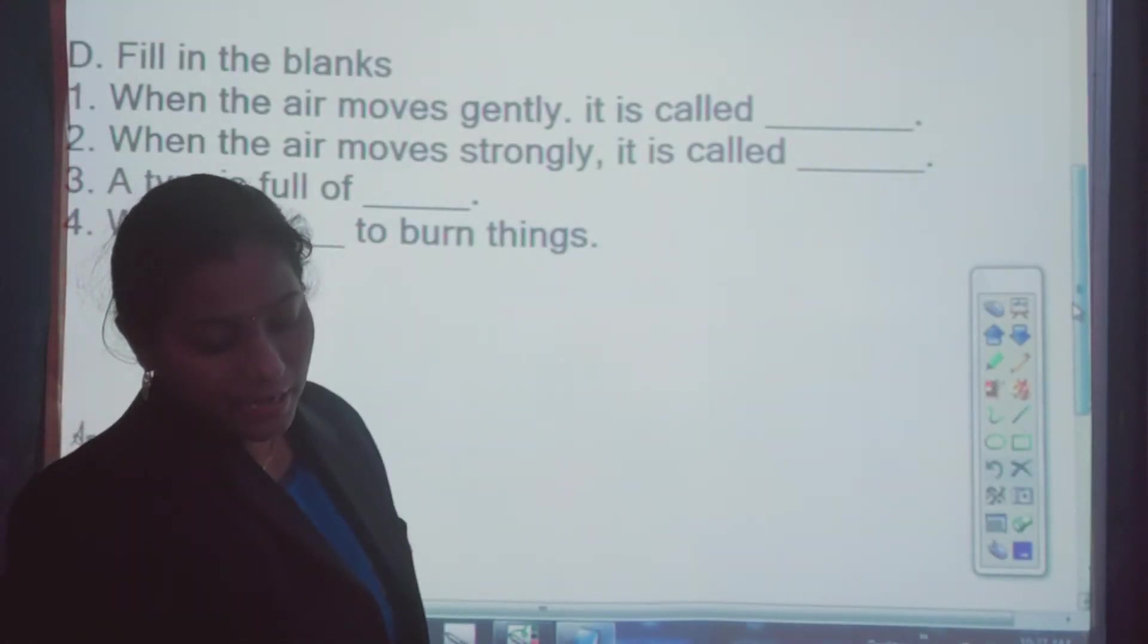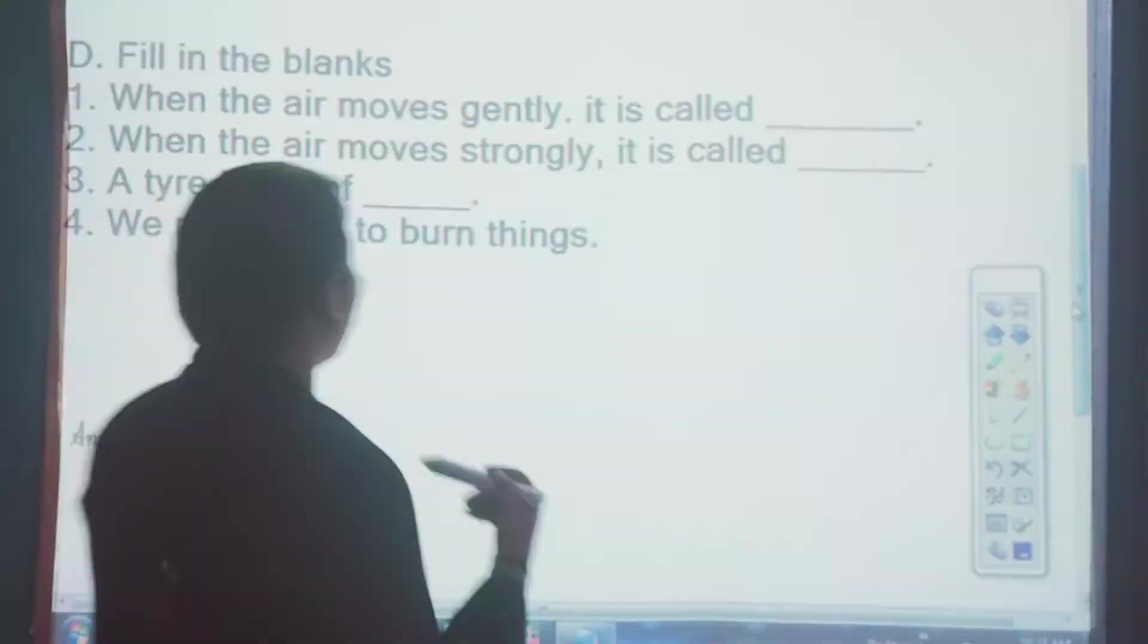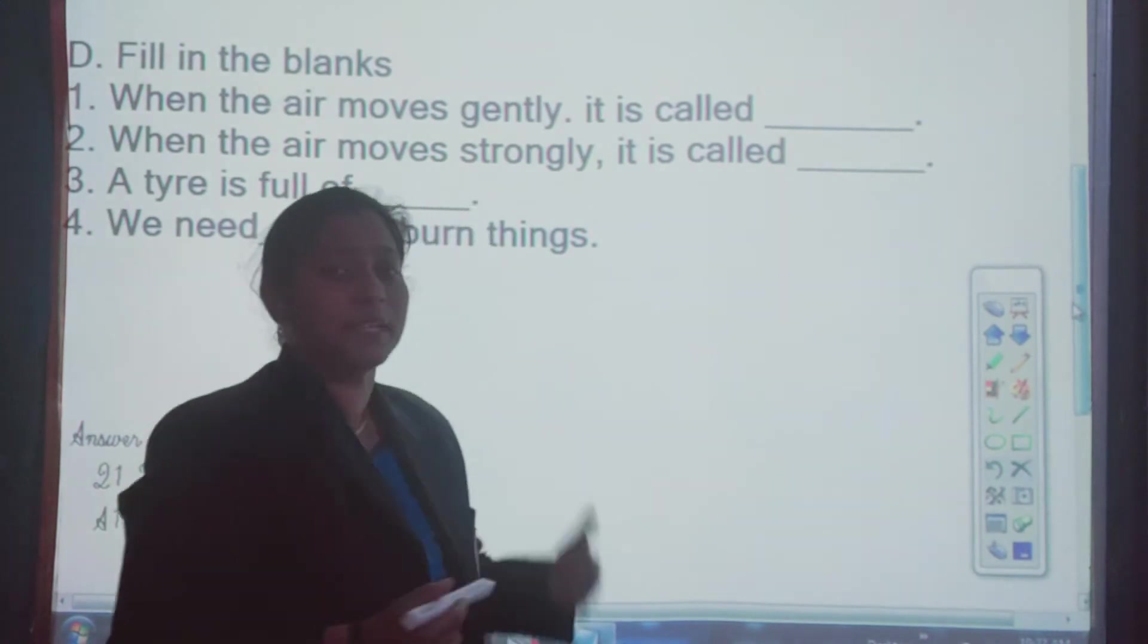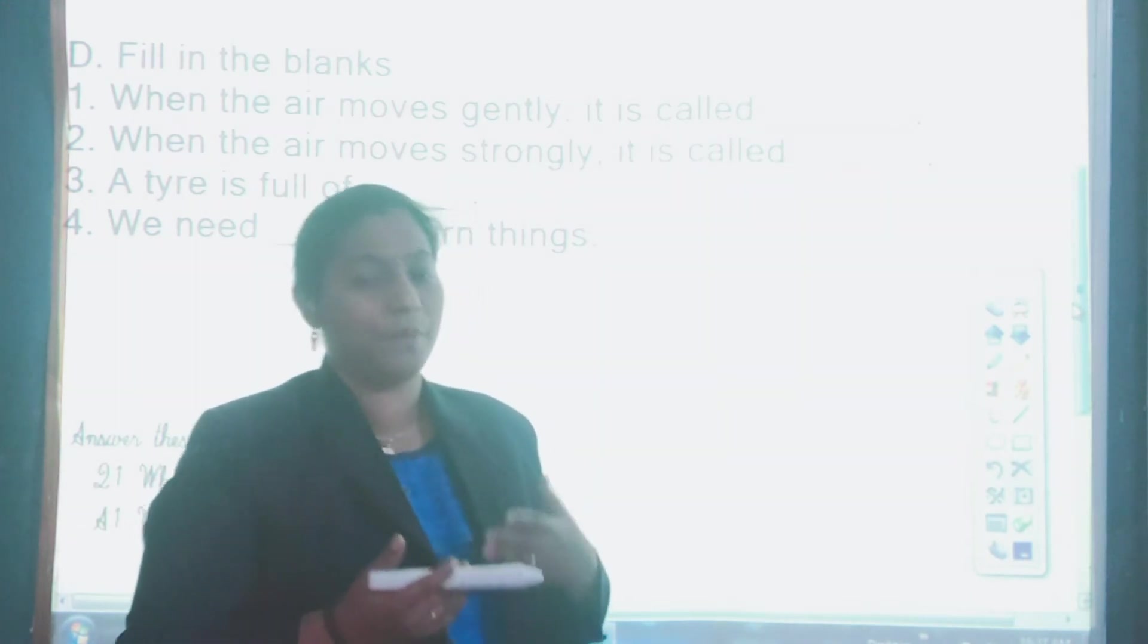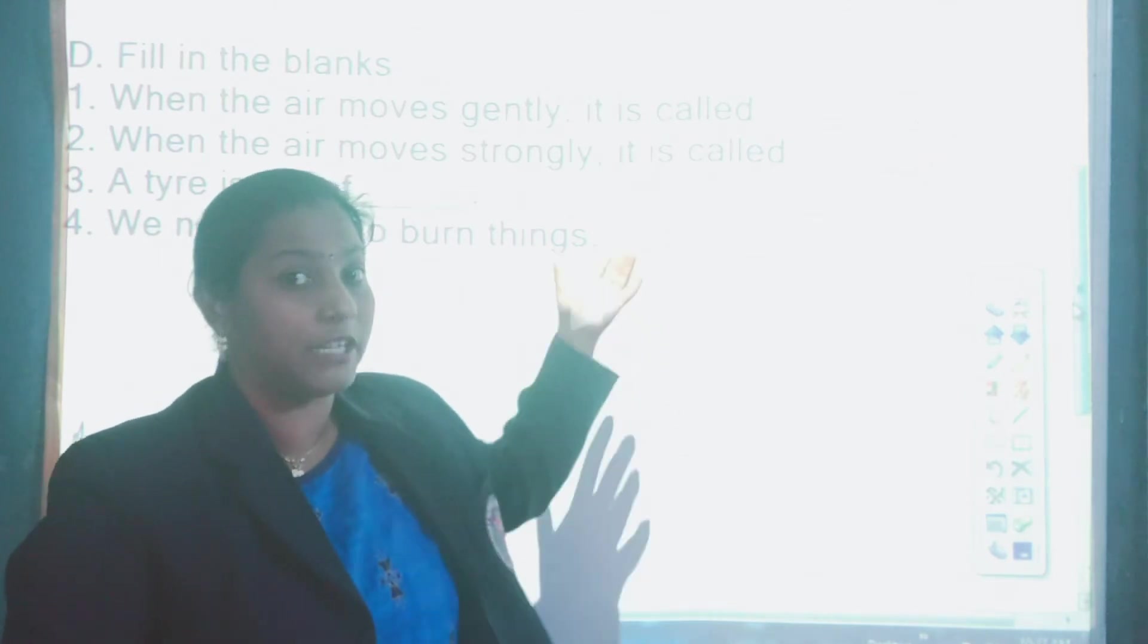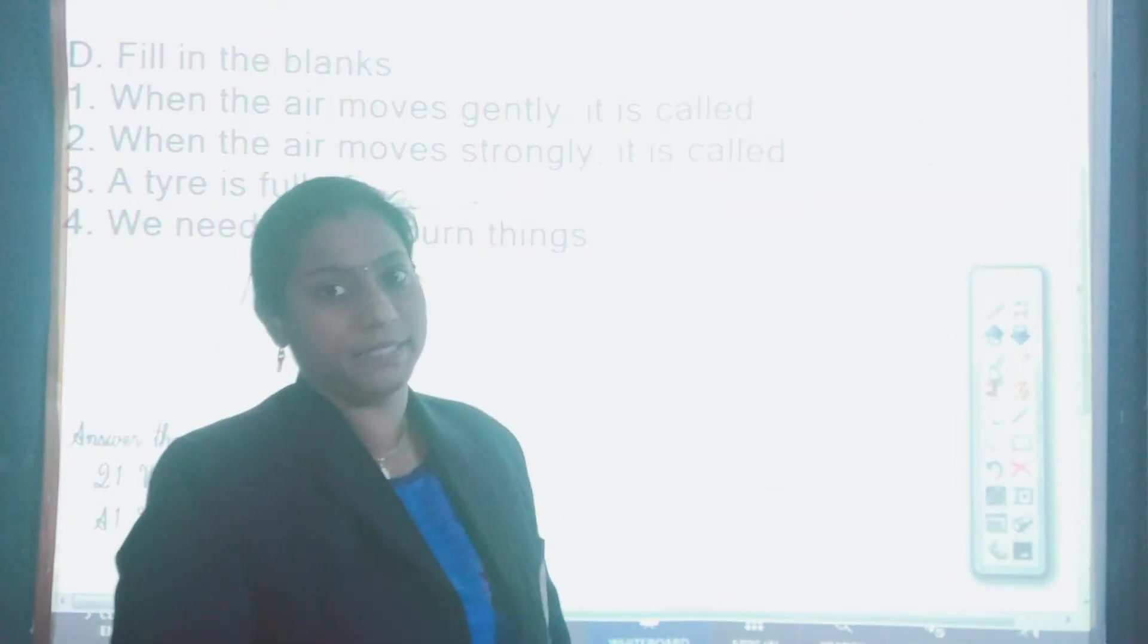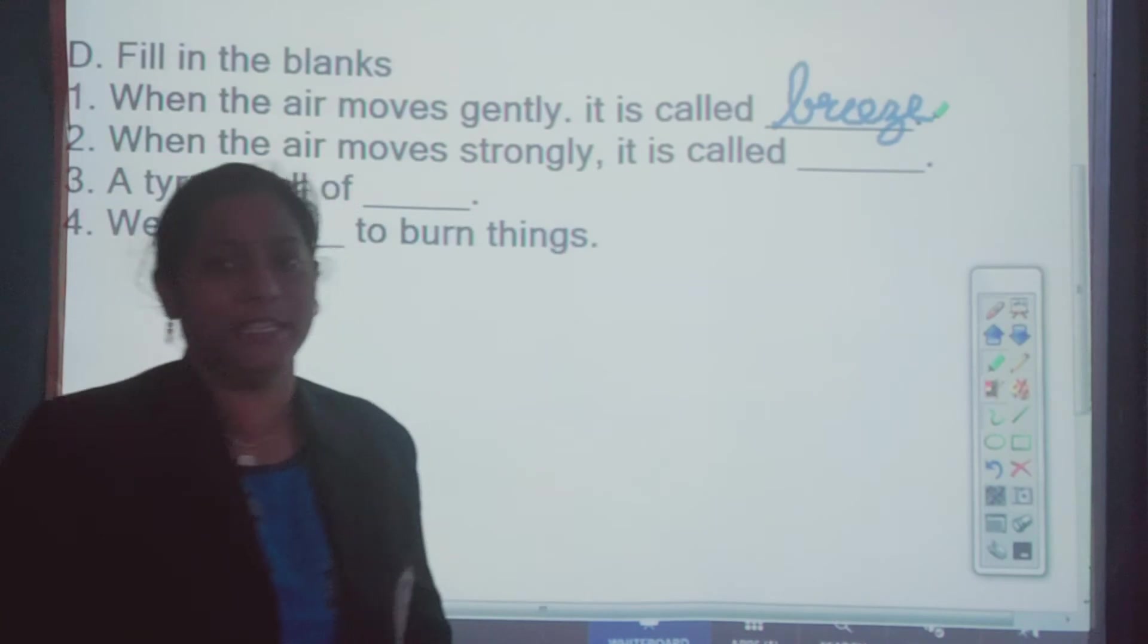That is fill in the blanks with correct words from the bracket. In the bracket words are also given. So you have to fill with the correct word in the blanks. First one, let's read. Let's start reading students. When the air moves gently, when the air moves gently, it is called what? Gently means behut achhi tarah, behut pleasantly, jo hamay achha lagay, jo air hamay relax karvay. So jo good feeling wali air hoti hai, jo gentle hoti hai, jo aram se hoti hai, that is called breeze. So you are going to write B-R-E-E-Z-E breeze.